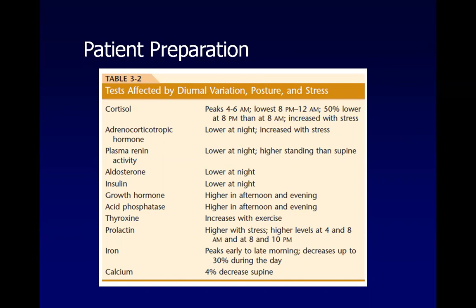In addition to cortisol, ACTH, renin, aldosterone, and insulin are noted to have lower levels at nighttime. Growth hormone and acid phosphatase are higher in the afternoon and evening. Prolactin has two peak levels — at 4 and 8 AM and at 8 and 10 PM. Iron, found in hemoglobin, has peak levels early to late morning and decreases up to 30 percent during the day.